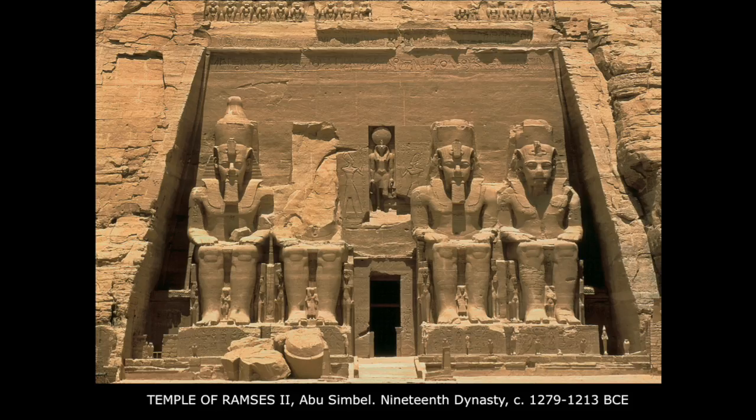The Temple of Ramses II at Abu Simbel is from the 19th Dynasty. Ramses was Egypt's last great warrior pharaoh and he ruled for nearly 60 years — incredible given the life expectancy was probably close to 40 years old. These are colossal figures, nearly 65 feet tall, but they lack the refinement of earlier periods because of their size. Ramses honored the most important members of his family with large statues inside the structure.